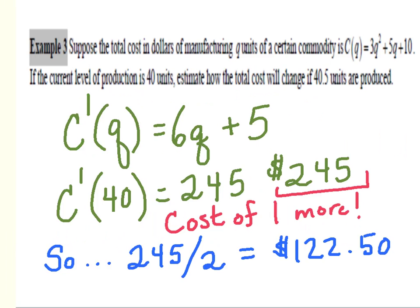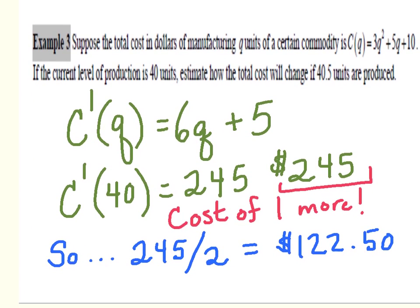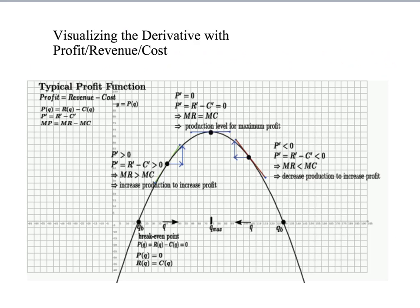In example three, we are given a cost function and looking at a current production level of 40 units, and we want to estimate how the total cost will change if 40.5 units are produced. We take the derivative of our cost function and get 6q plus 5. C prime of 40 tells us $245 would be the cost of one more unit. Since we are only looking at 40.5 units, we take 245 divided by 2 and our approximation is $122.50.